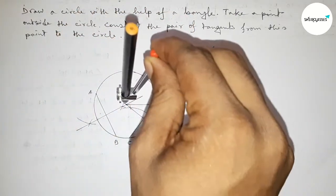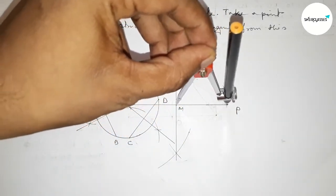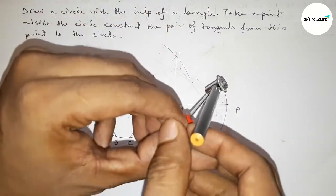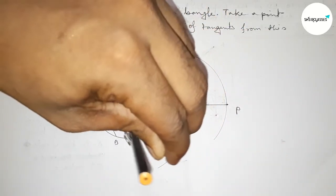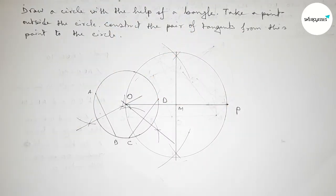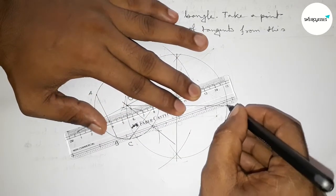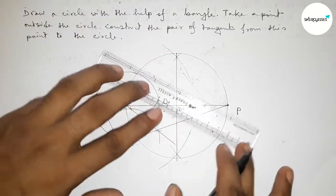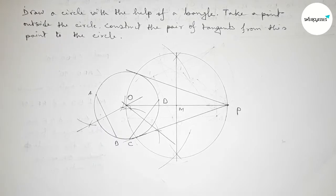Now we have to draw a circle with center M passing through points O and P. Drawing a circle with center M through O and P by this way. The circle meets the original circle at two points — one point here and one point here.